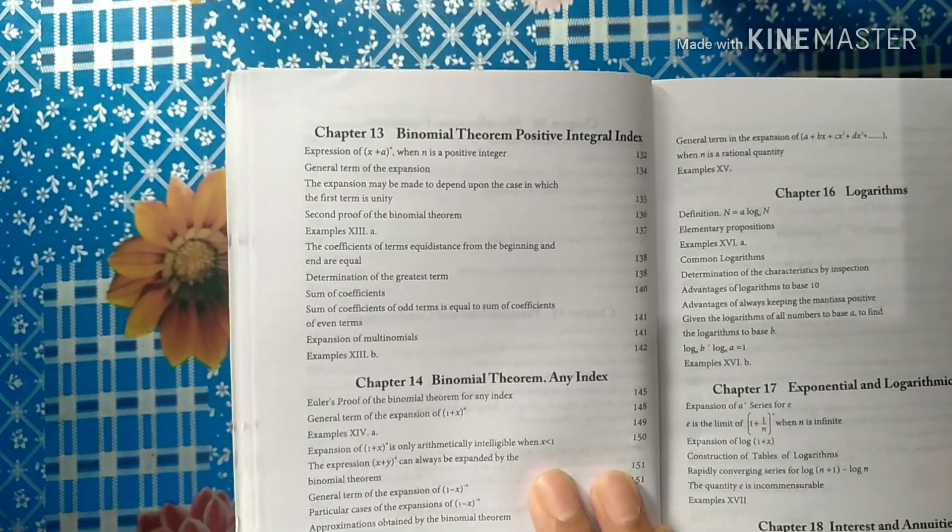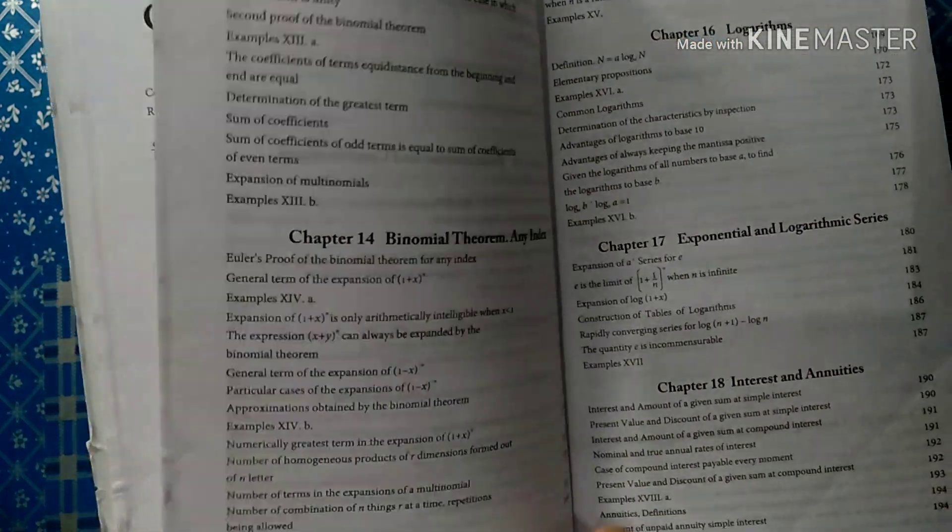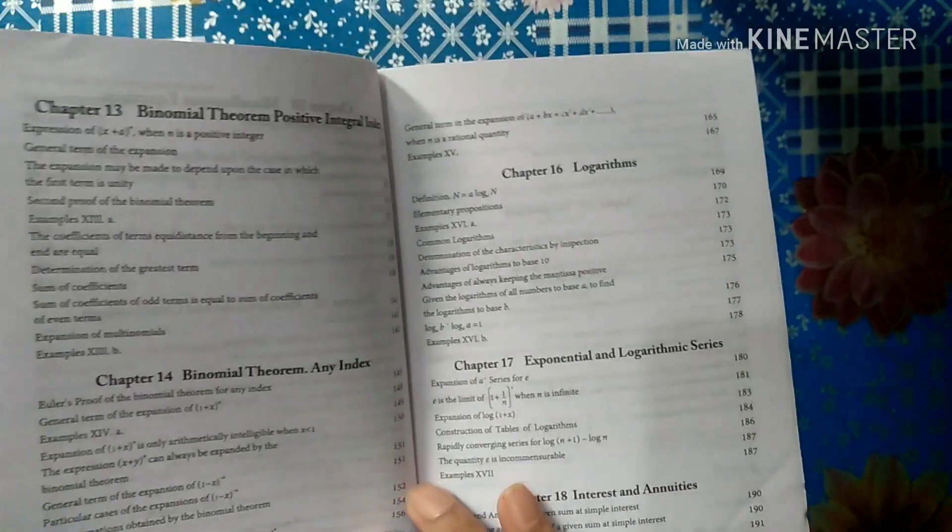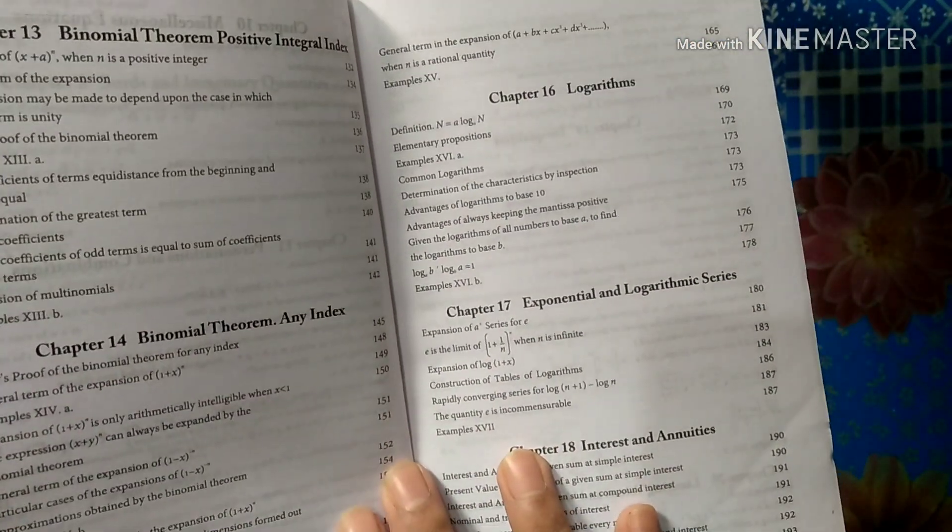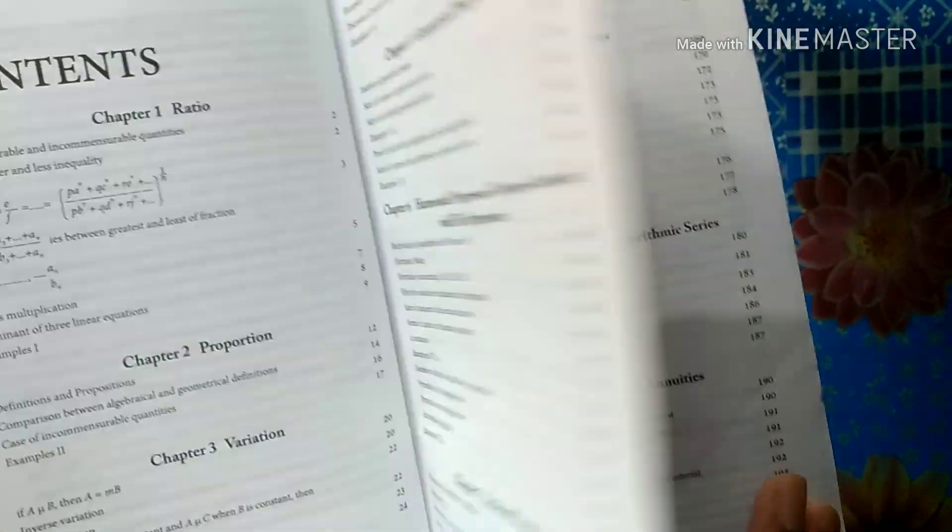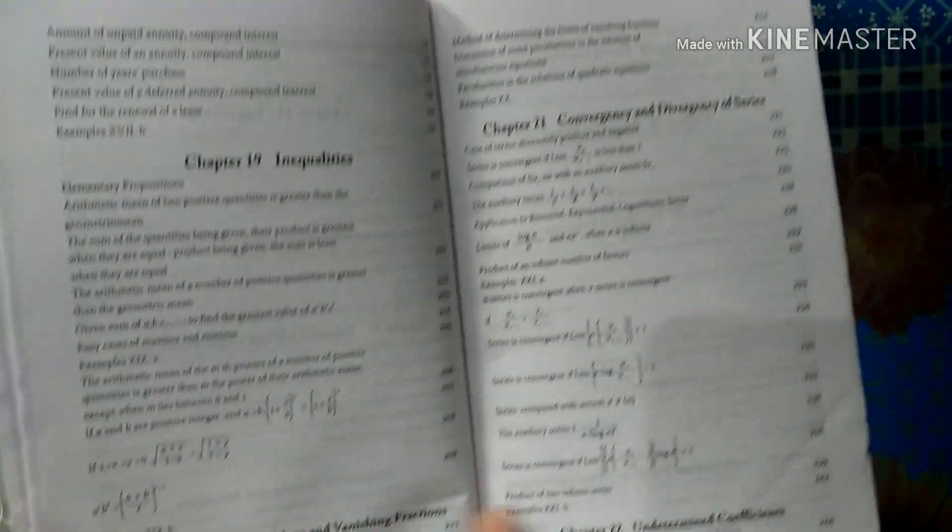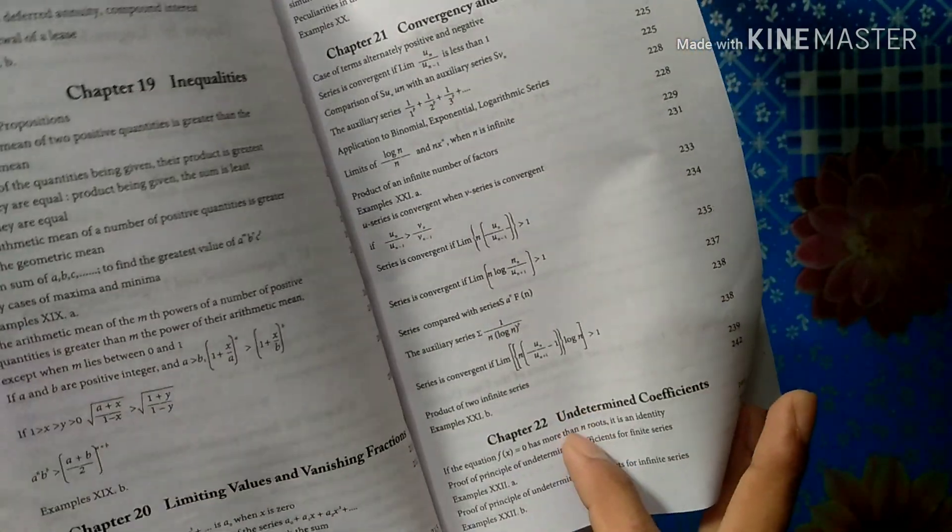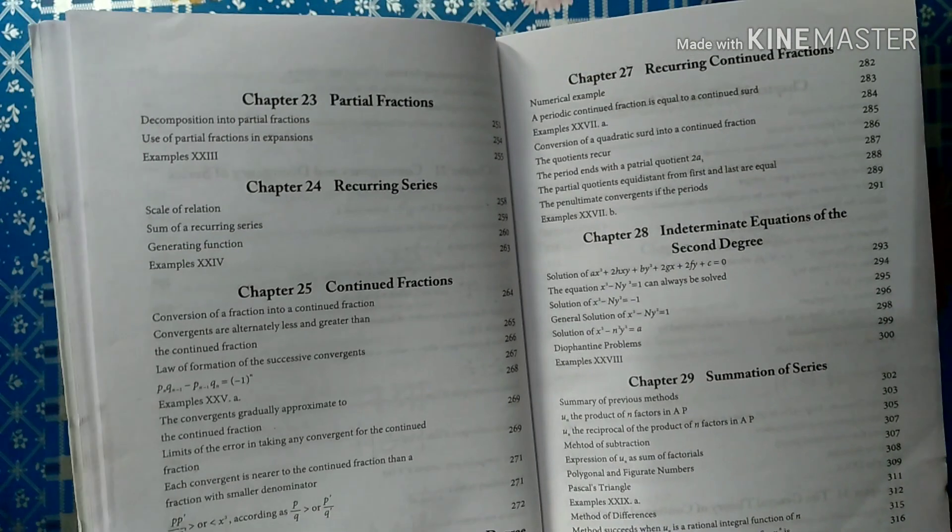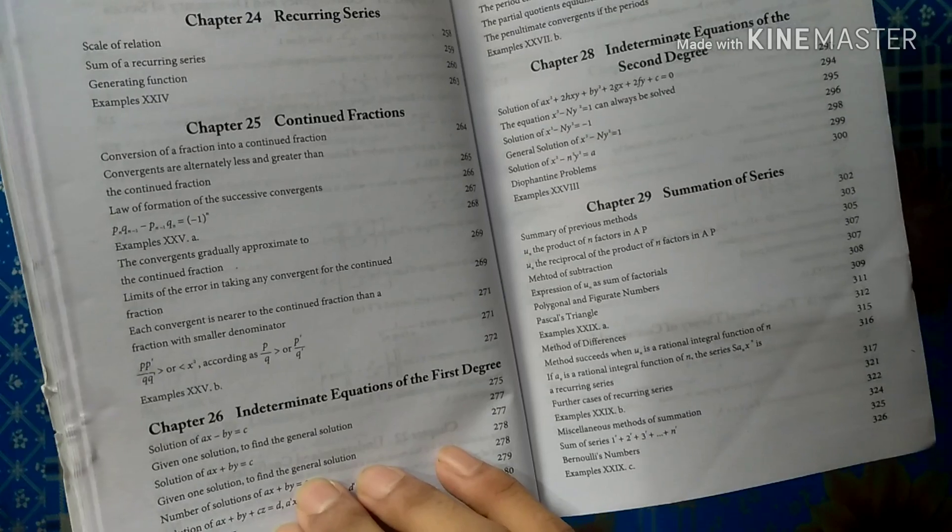Positive Integral Index. Also Negative Integral Index. Multinomial Theorem, Logarithms, Exponential and Logarithmic Series, Interest and Inequality, Limiting Values and Vanishing Fractions, Convergency and Divergency of Series, Undetermined Coefficients, Partial Fractions, Recurring Series, Continued Fractions.